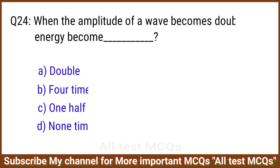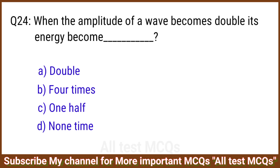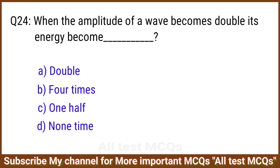Q24. When the amplitude of a wave becomes double, its energy becomes? The right answer is option B: Four times.